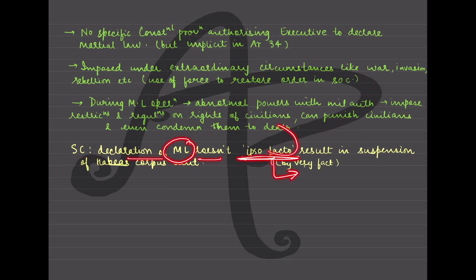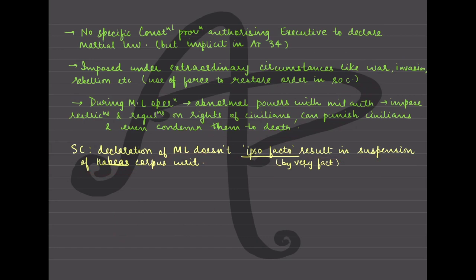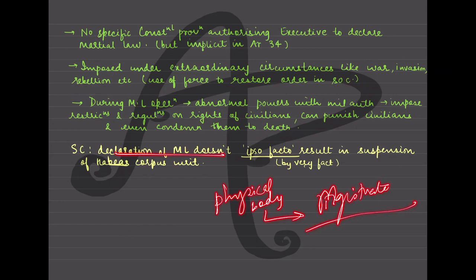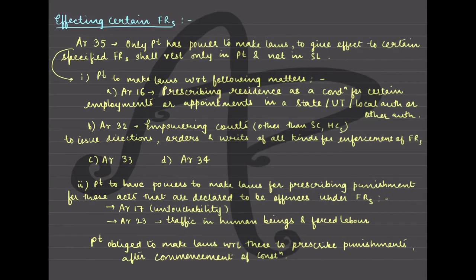However, the Supreme Court has given a declaration that a declaration of military rule does not ipso facto — that is, by the very fact of being declared — result in the suspension of the habeas corpus writ. We will study habeas corpus in detail when we do Article 32, but broadly it means that if someone has been arrested, their physical body — that person — must be presented before a magistrate. The suspension of habeas corpus is an exception, and this you have to remember.